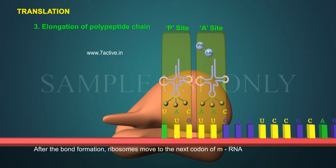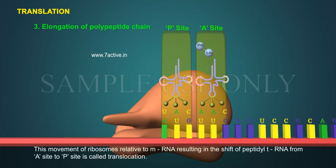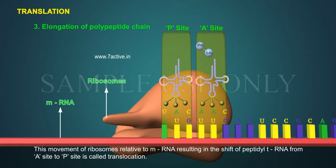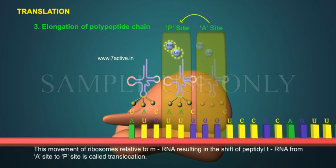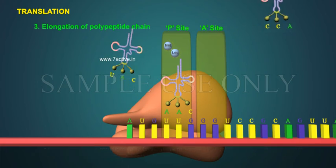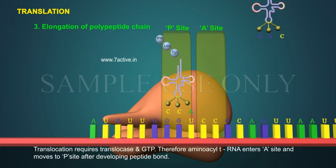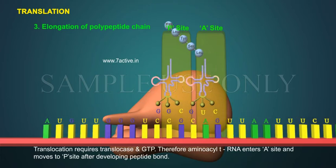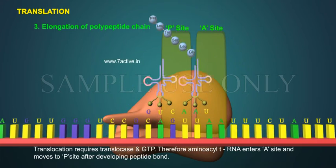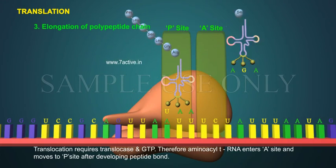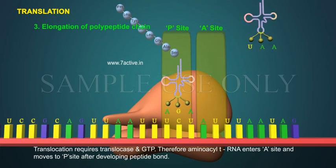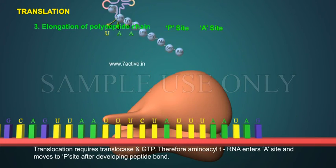After bond formation, the ribosomes move to the next codon of mRNA. This movement of ribosomes relative to mRNA, resulting in the shift of peptidyl tRNA from the A site to the P site, is called translocation. Translocation requires translocase and GTP. Therefore, aminoacyl tRNA enters the A site and moves to the P site after developing a peptide bond.